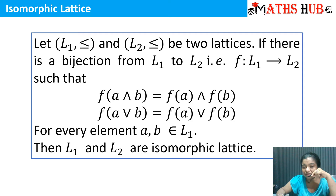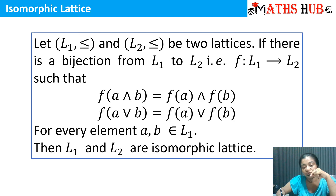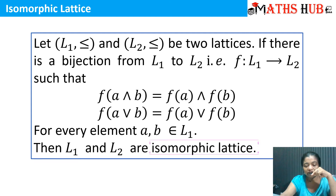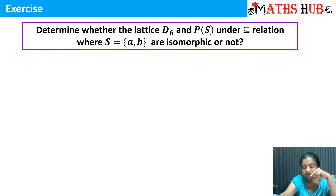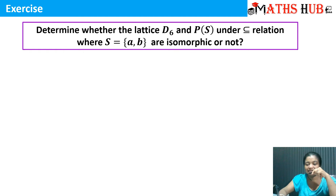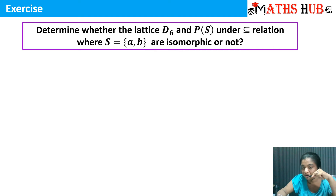Bijection means a one-to-one and onto mapping. For every element in the first lattice, if these two properties are satisfied, then we say that the two lattices are isomorphic to each other. Let us try to understand this definition with the help of an example. The first example is to check whether the lattice D6 and P(S) under the subset relation, where S is {A, B}, are isomorphic or not.